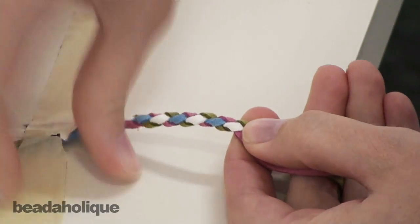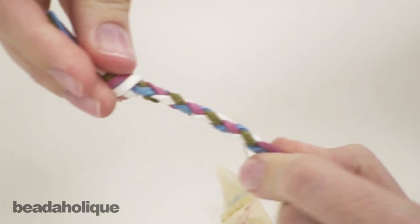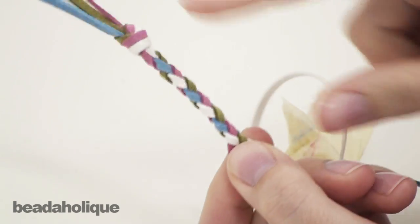So you can see that it gives us this nice round braid. And to finish this, you can either just knot the ends.